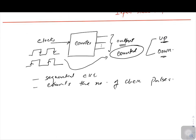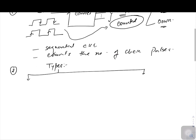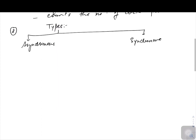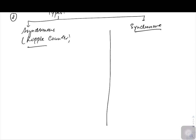The next point we need to know is what are the different types of counters we need to study. Broadly, if we categorize counters, there are two main types: one we call an asynchronous counter and the other we call a synchronous counter. The asynchronous counter is also called a ripple counter. We have to study both counters in detail in order to differentiate between the two.